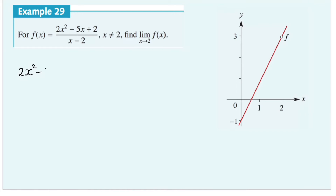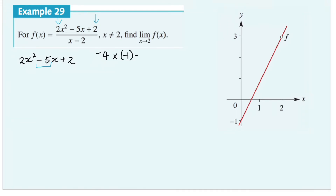Let's factorize the numerator first. To factorize this quadratic, we first multiply the coefficient of the x squared term by the constant term c. In this case, the coefficient of the x squared term is 2, and the constant term is also 2, and 2 times 2 equals 4. So that means we need to find two numbers which have a product of 4 and a sum of negative 5. The reason why we want a sum of negative 5 is because we have negative 5 in this term here. Those numbers are negative 4 and negative 1, because negative 4 times negative 1 equals 4, and negative 4 plus negative 1 equals negative 5.